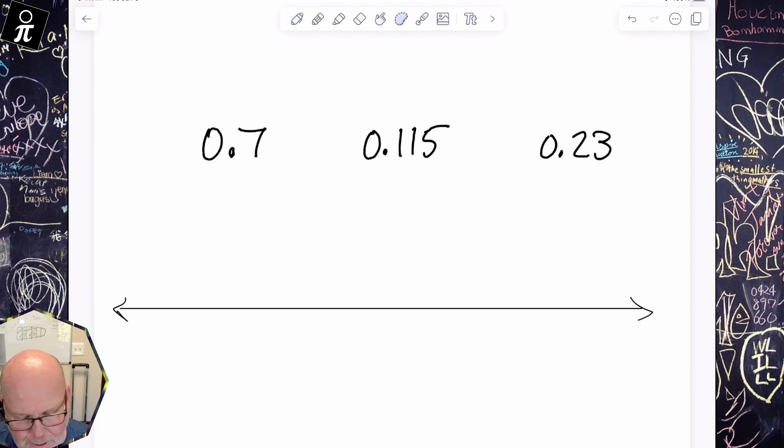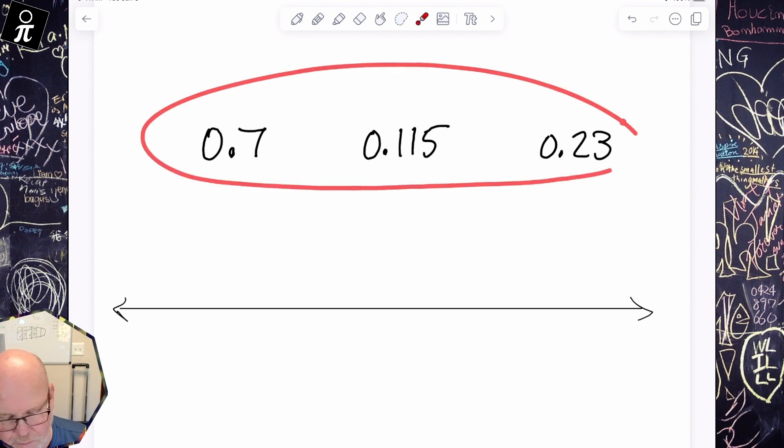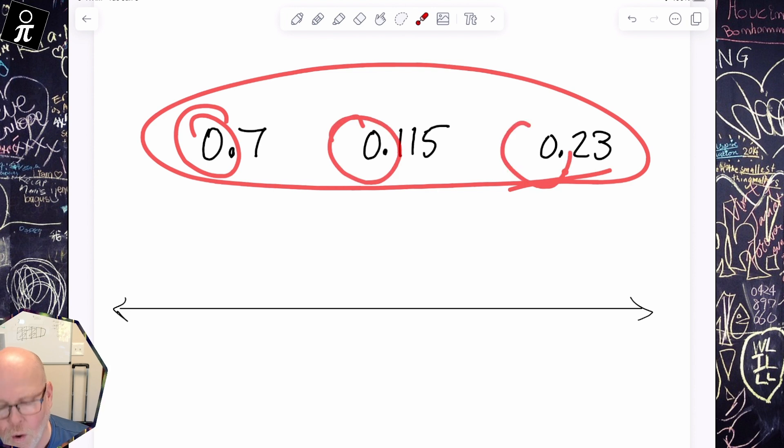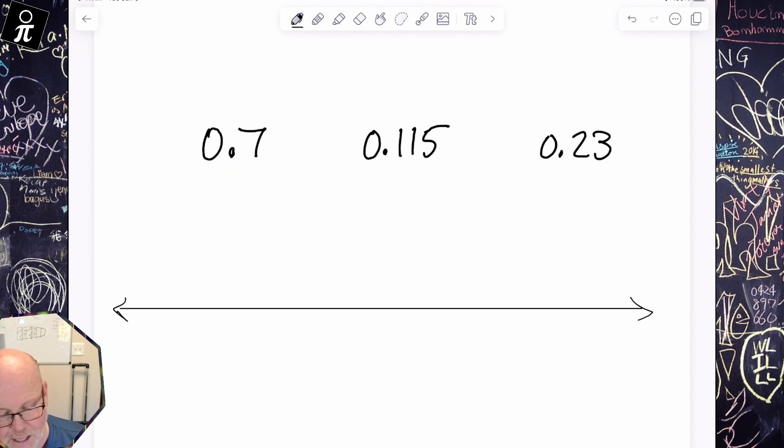So let's do that. Because I see that all of these numbers are less than one whole, I'm going to make my number line go from zero on the left to one on the right. So now we know that all three of these numbers live somewhere in this number line. All right, so now in no particular order, let's just start with 0.7.